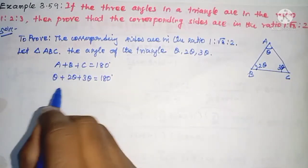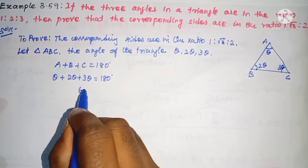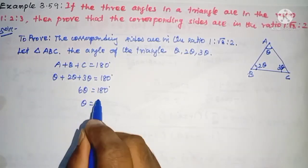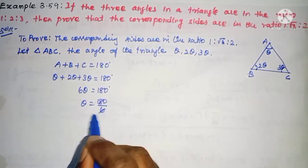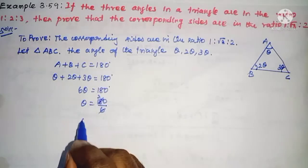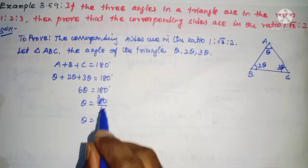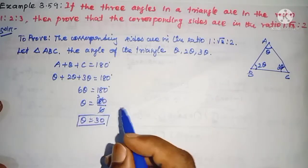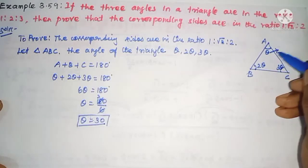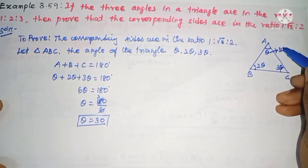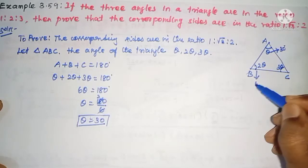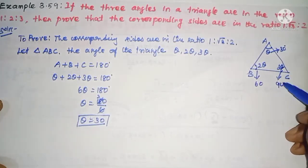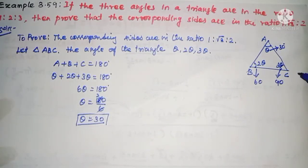Adding them, we get 6θ = 180°. So θ = 180° ÷ 6 = 30°.